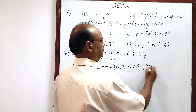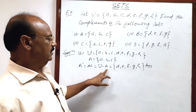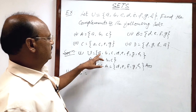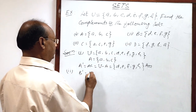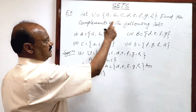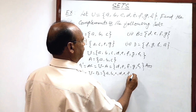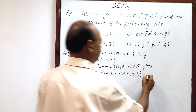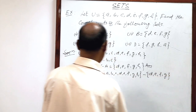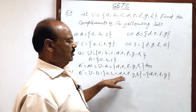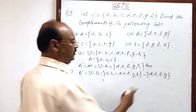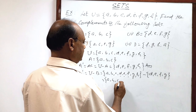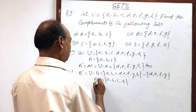This is the answer for A complement: {d, e, f, g, h}. So U minus A gives A complement. Similarly, B complement equals universal set minus set B. Universal set has elements a, b, c, d, e, f, g, h, minus set B having elements d, e, f, g. The common elements d, e, f, g are removed, so the rest of the elements will be a, b, c, and h. This is B complement.